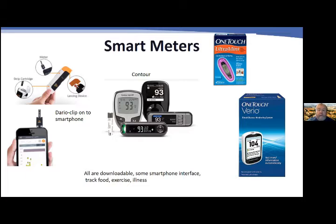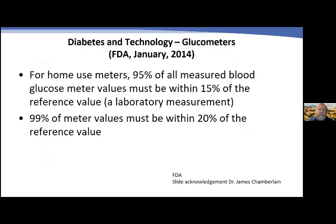If patients enter all different kinds of data, you can get a very easy-to-read comprehensive overview of what's been happening — much better than a traditional paper logbook. About six years ago, the FDA issued guidance to improve meter accuracy: 95% of all measured blood sugar values must be within 15% of the reference, and 99% must be within 20% of the reference.